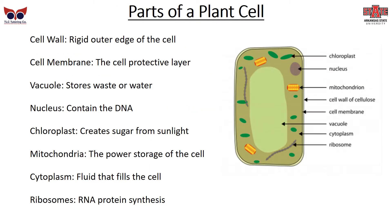In comparison, a typical plant cell has many things in common with an animal cell, but there are some differences. First, there is a cell wall outside the cell membrane — a rigid outer edge. Then you have the cell membrane, the protective permeable layer underneath. There is a larger area in the middle called a vacuole, which can store waste or water inside the cell, and this is unique to plants. There's also a nucleus with DNA, and green structures called chloroplasts, where chlorophyll creates sugar for energy from sunlight. They do have mitochondria to convert sugars into ATP, cytoplasm filling the cell, and ribosomes for protein synthesis.